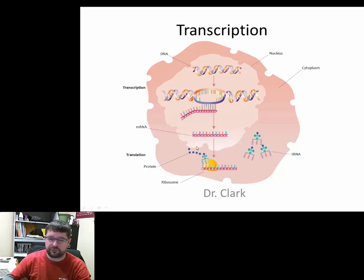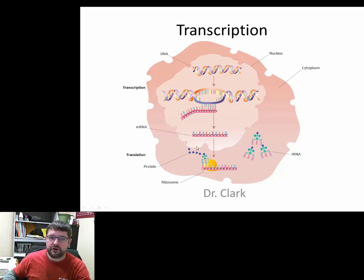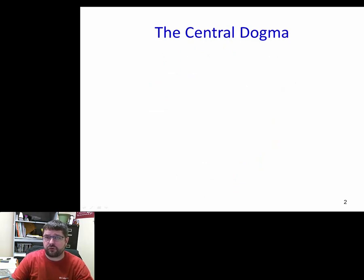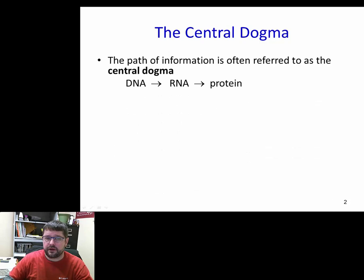That messenger RNA is then utilized to link amino acids together to form a protein — that is translation. We're going to spend the next few lectures going through transcription and translation, and then how this process is regulated.